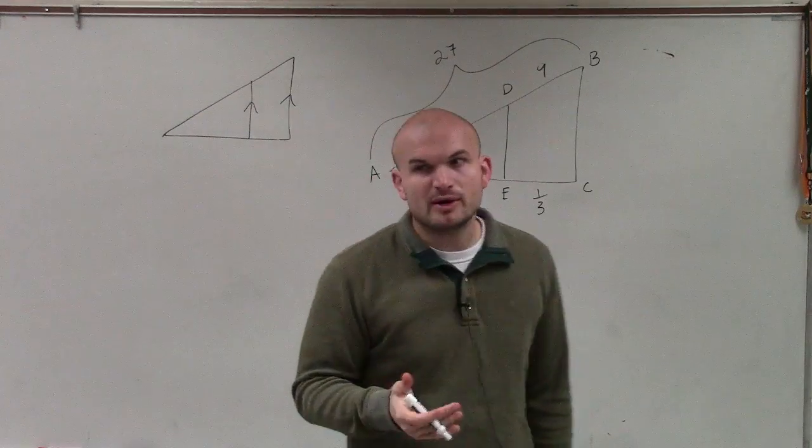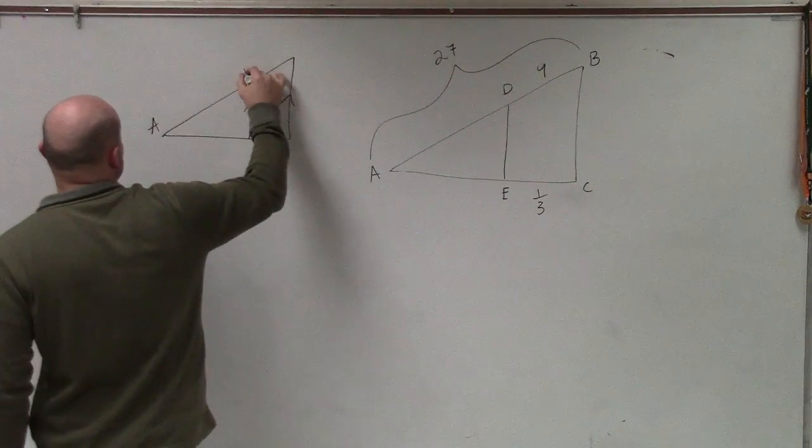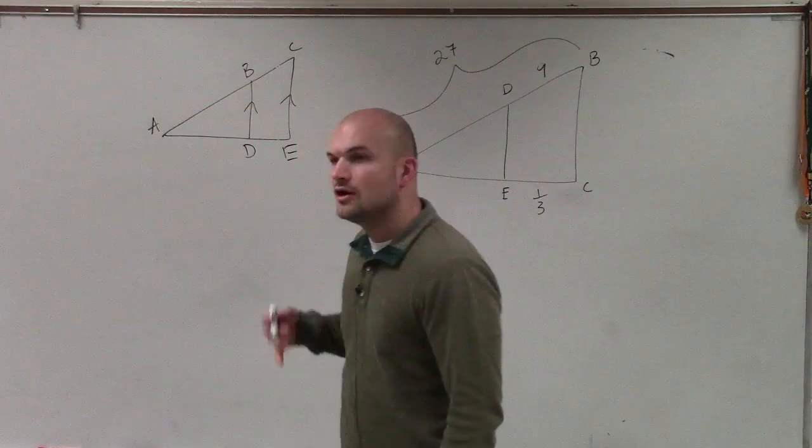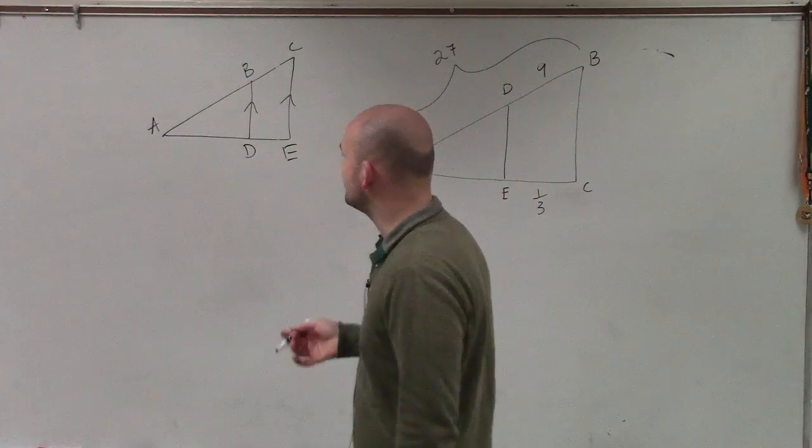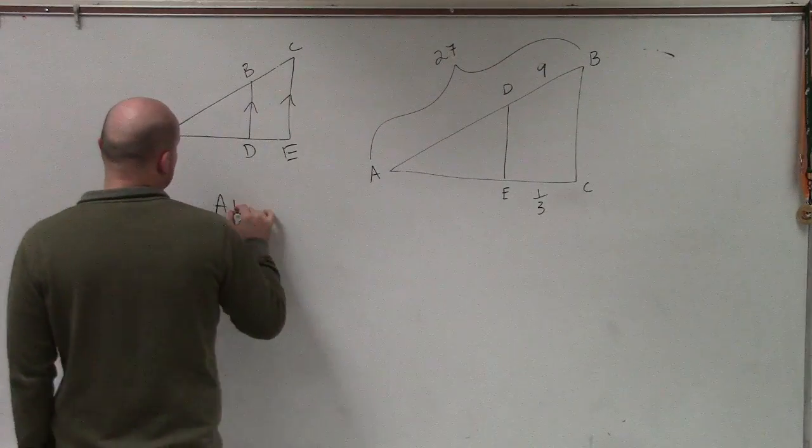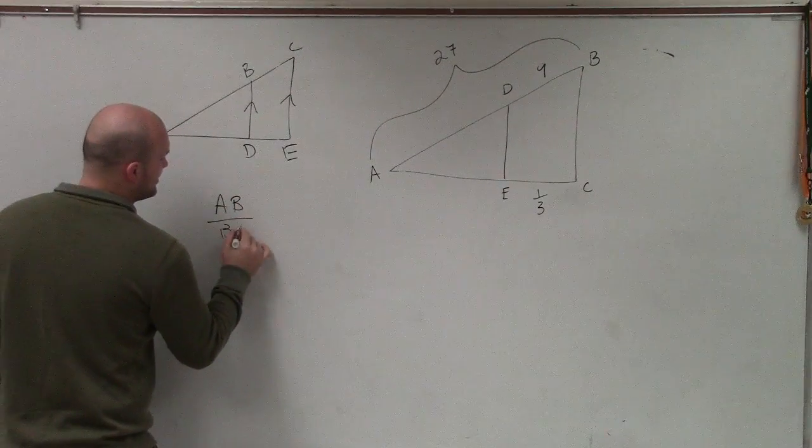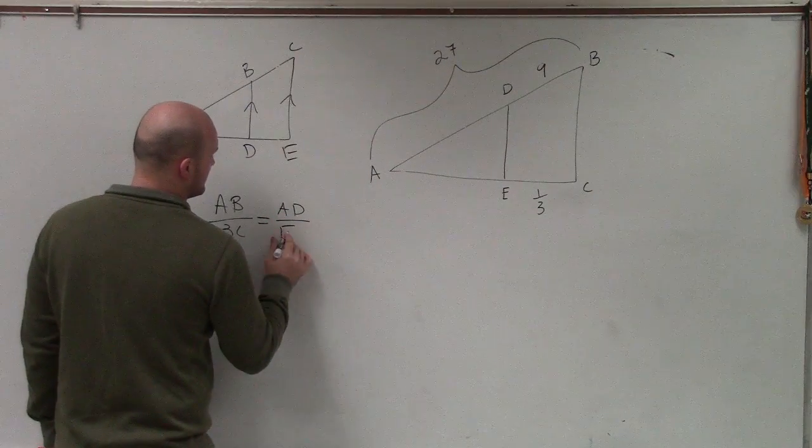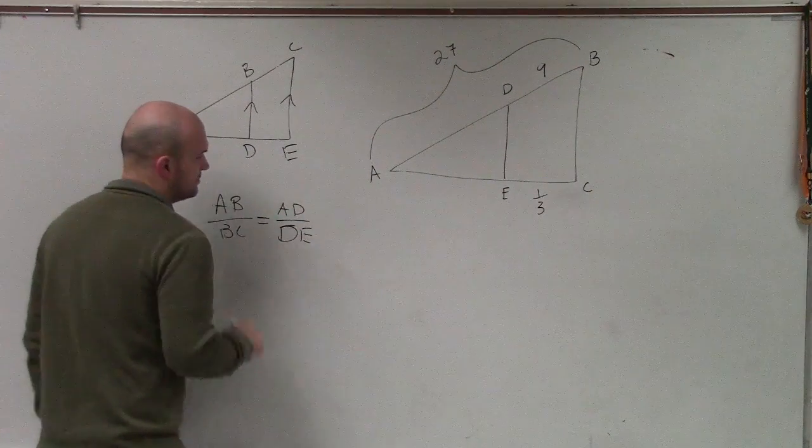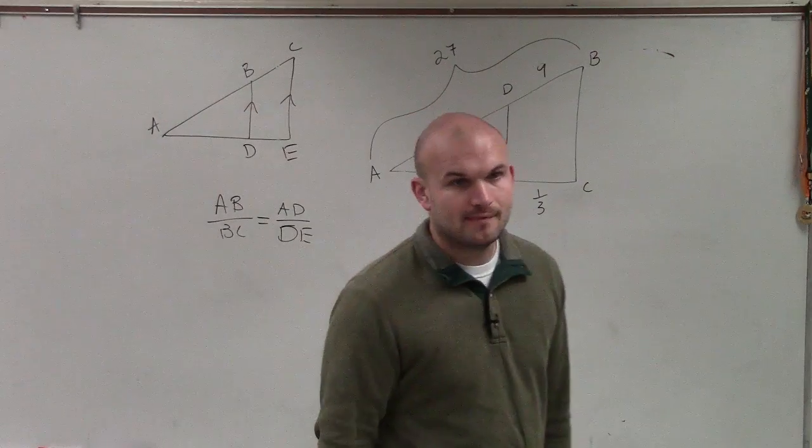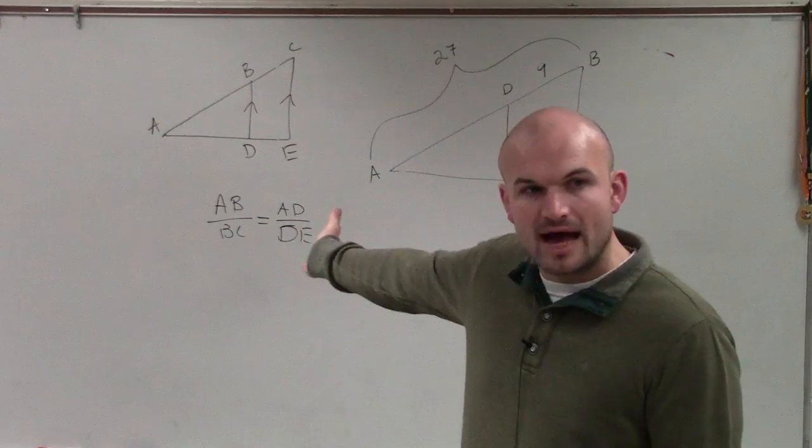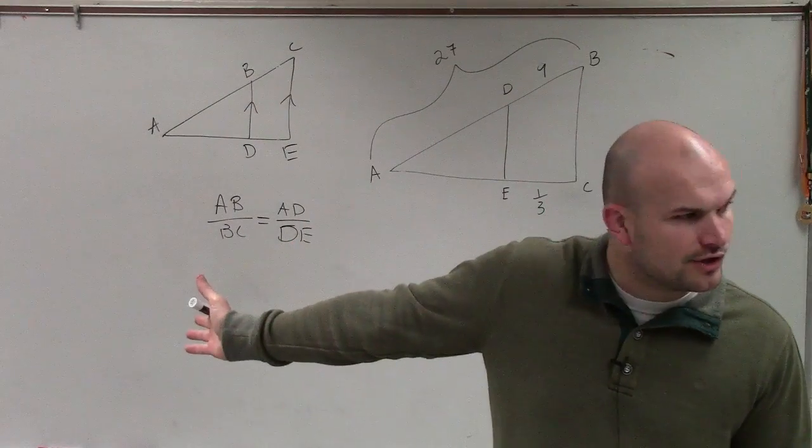This is what we went over last class to prepare for this homework. And we said this was ABC, and that was DE. The triangle proportionality theorem stated that the ratio of AB to BC was equal to the ratio of AD over DE. When you had that parallel lines of a triangle, that was your theorem.